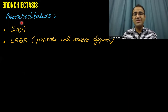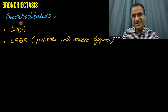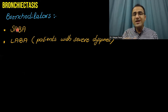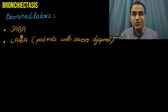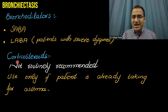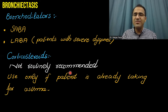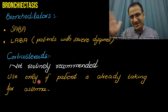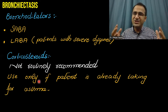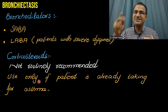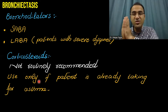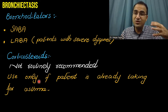Bronchodilator therapy is not the main treatment for bronchiectasis; the evidence supporting its use is very limited. In specific cases, short-acting beta agonists like albuterol can be used. Long-acting beta agonists can be given to patients with severe dyspnea. Corticosteroids are not routinely recommended — they are used only if the patient is already asthmatic and has developed bronchiectasis. Bronchiectasis typically develops in patients with pre-existing conditions such as TB, aspergillosis, or chronic asthma.